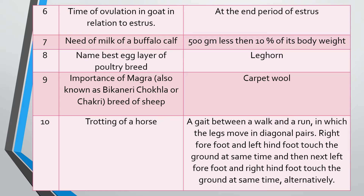Question nine: Importance of the Magra breed of sheep. The Magra breed is also known as Bicaneri, Chokhla, or Chakri breed. Answer: It is useful for producing very good carpet wool.